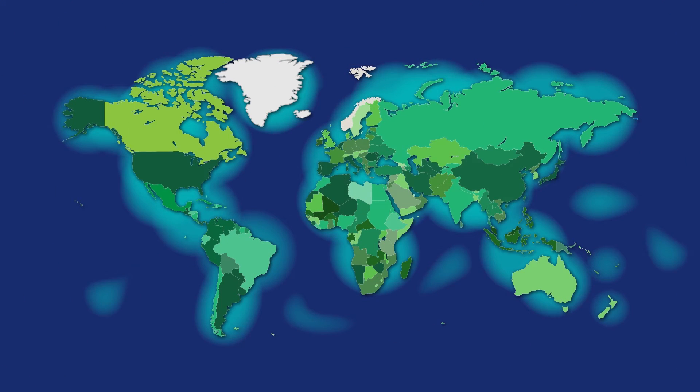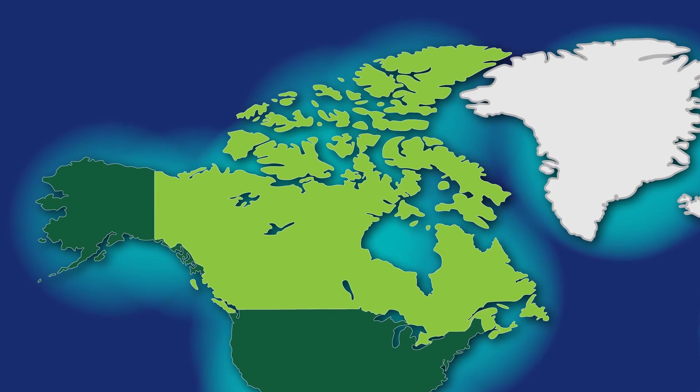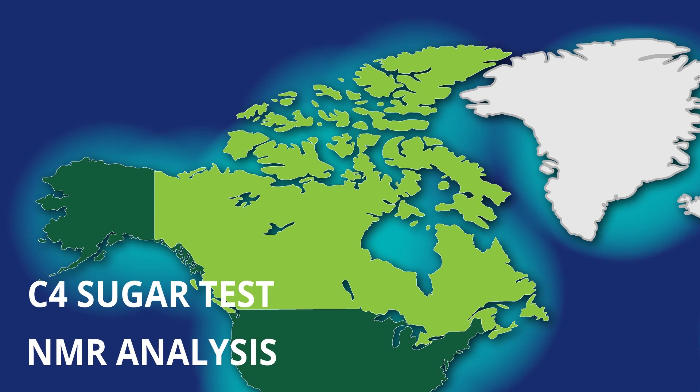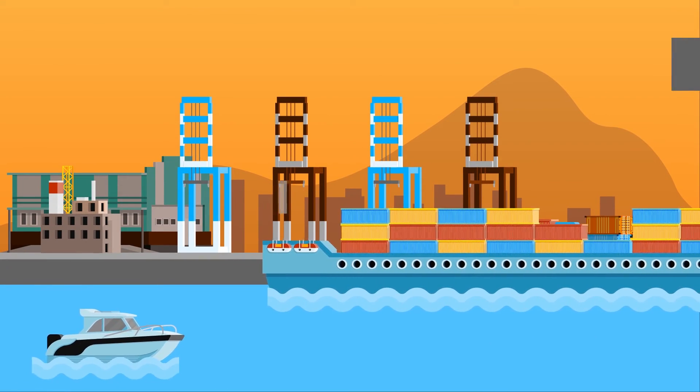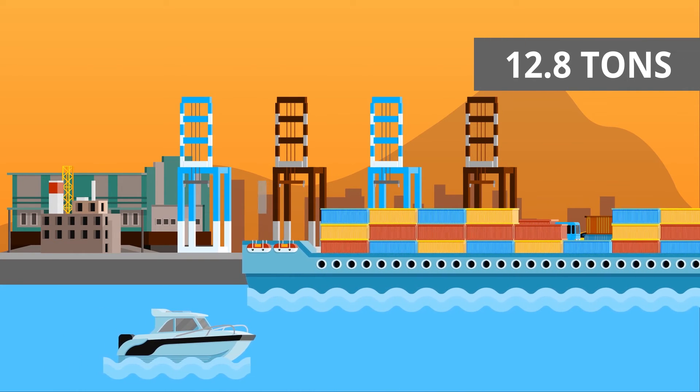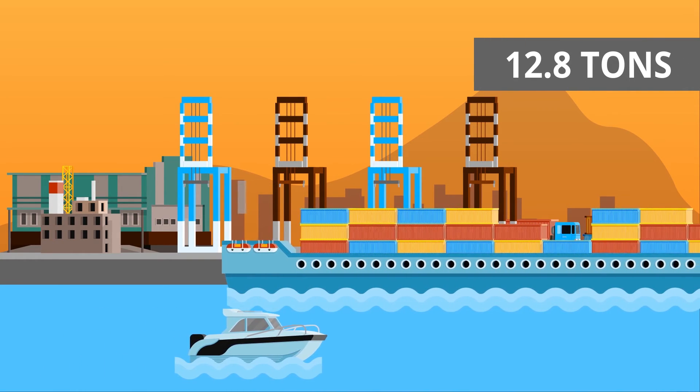In 2018, several shipments of honey to Canada were tested using the C4 sugar test, as well as the NMR analysis. 12.8 tons of adulterated honey were seized and were prevented from entering Canadian markets.